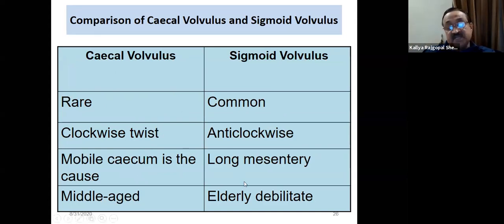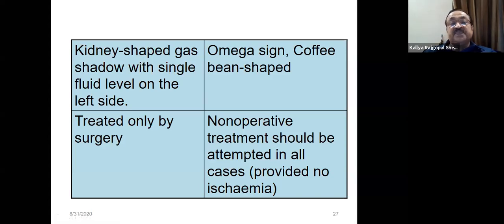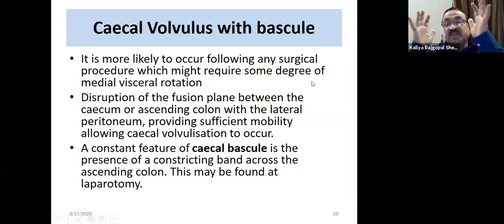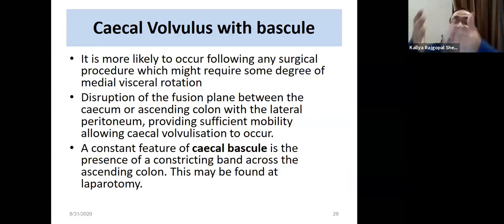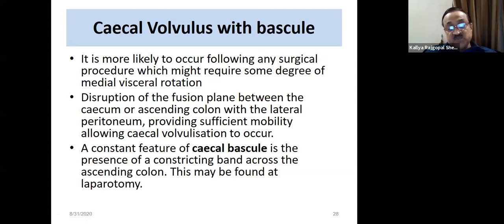On imaging, cecal volvulus produces a single fluid level and a kidney- or round-shaped shadow on plain X-ray, whereas sigmoid volvulus shows the omega sign. An interesting variant is the cecal bascule, where the entire cecum and ascending colon turn to the other side without a complete twist. A band lies across the ascending colon and must be divided. This is called cecal bascule.